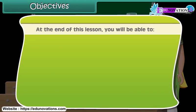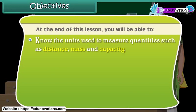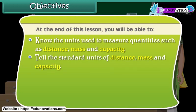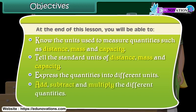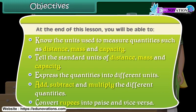At the end of this lesson, you will be able to know the units used to measure quantities such as distance, mass, and capacity. Tell the standard units of distance, mass, and capacity. Express the quantities into different units. Add, subtract, and multiply the different quantities. Convert rupees into paise, and vice versa.